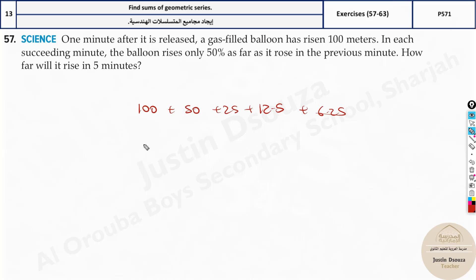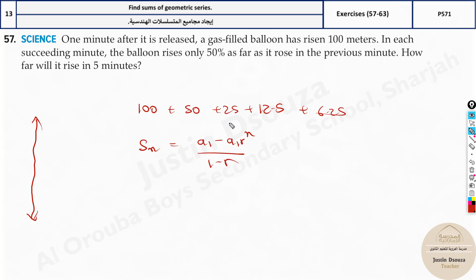Since they want to know the total distance the balloon travels upward, we use the S_n formula: S_n equals a1 minus a1 times r to the power n, divided by 1 minus r. The first term a1 is 100. r is 50% which is 0.5.